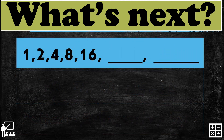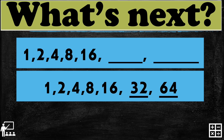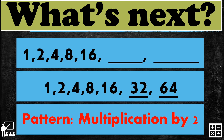Next: 1, 2, 4, 8, 16. Can you guess what are the two next numbers? That's right, it's 32 and 64. So the sequence for this example is 1, 2, 4, 8, 16, 32, and 64. The pattern used is multiplication by 2.